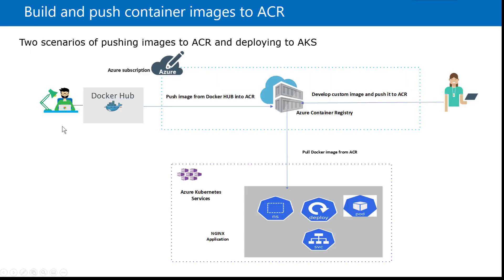So these are the two scenarios. In one scenario, the user wants to import an image which is already created in Docker Hub and then push this image into the private registry or ACR in Azure. And then from there, the user deploys this image into Azure Kubernetes Services. In scenario two, the user creates a local custom image with the help of a Dockerfile, and then finally after creating this image, it is deployed into AKS or Azure Kubernetes Services.